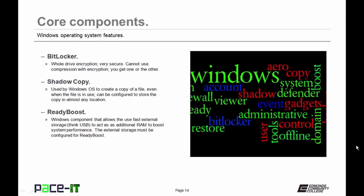Microsoft introduced Shadow Copy, used by Windows operating systems to create a copy of a file even when it's in use, and it can be configured to store the copy in almost any location — a great way to roll back what you're working on. Microsoft also introduced ReadyBoost, a way of using fast external storage — usually USB drives — as additional RAM, which can boost system performance. The external storage must be configured to be ReadyBoost ready.